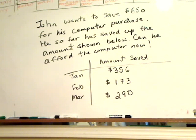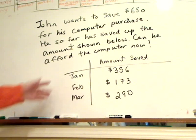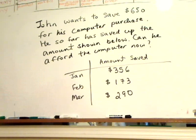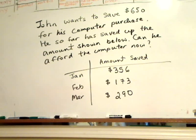John wants to save $650 for his computer purchase. He so far has saved up the amount shown below. Can he afford the computer now? Here is what he saved up: in January $356, February $173, and March he saved $290. Can he now purchase the computer? That's the question.